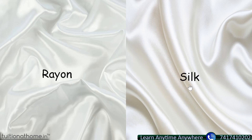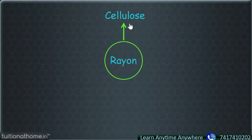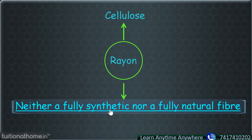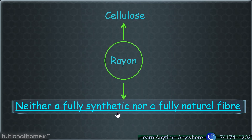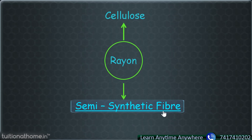But if you talk about the composition, rayon is actually made up of cellulose, which is a natural resource. That is the reason why we can say that rayon is neither a fully synthetic nor a fully natural fiber. Do remember that yes, we call it a synthetic fiber, but it is not fully synthetic — because for synthetic fibers, it has to be manmade and made of chemical compounds. So you can call it a semi-synthetic fiber.